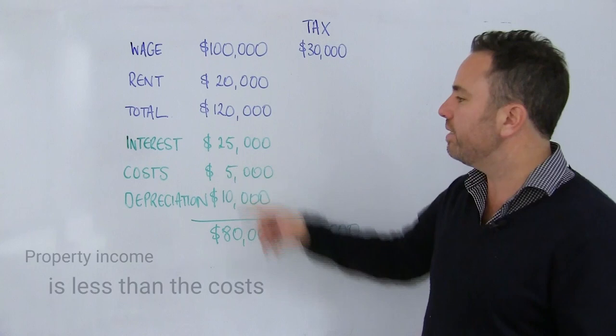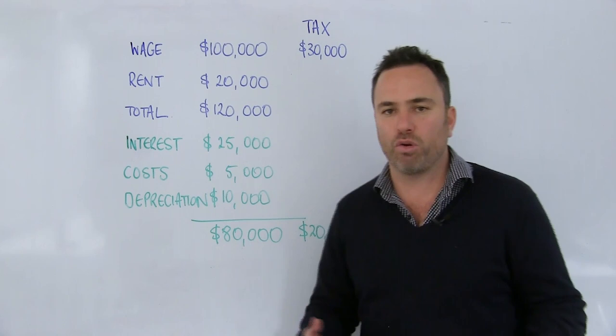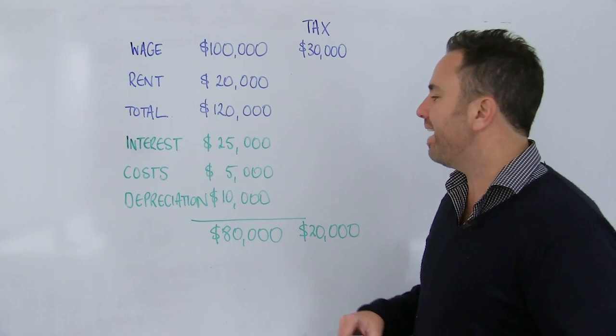So in this example, our interest costs are $25,000. Our other holding costs — which may be body corporate, et cetera — I've listed here at $5,000. All round numbers, all really easy to add up.